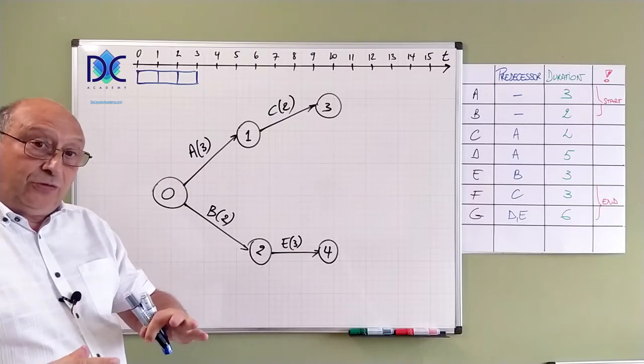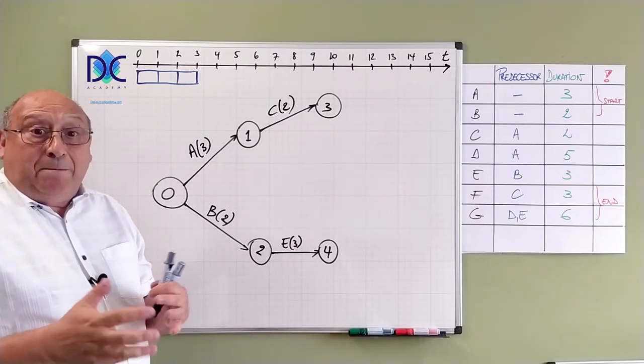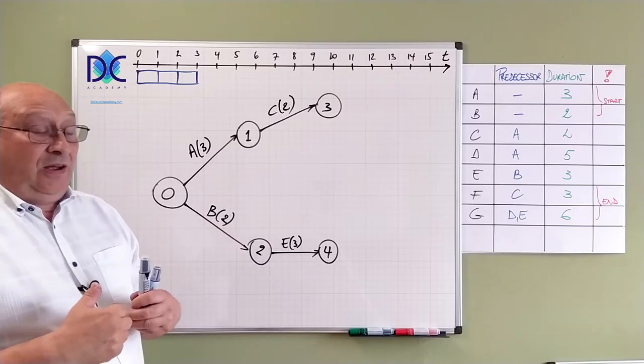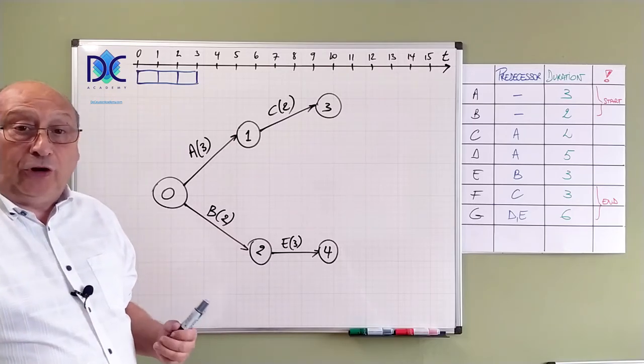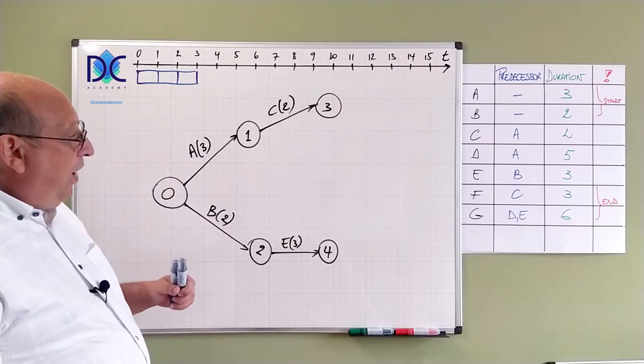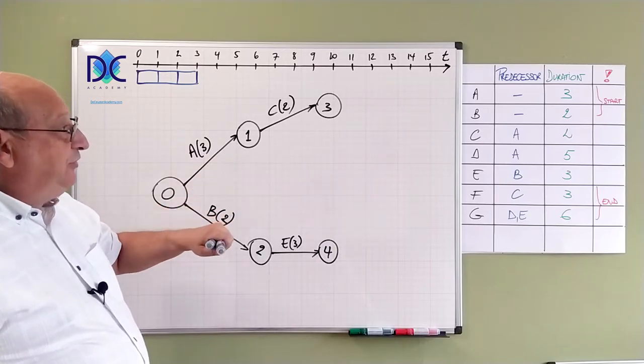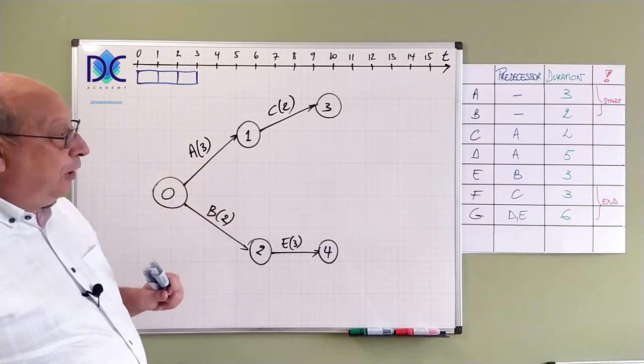You will see that afterwards we may have to adjust the drawing because sometimes we made some links that we have to correct later on. Now the other thing why I said we have to be careful is that now we have still activity D to complete.